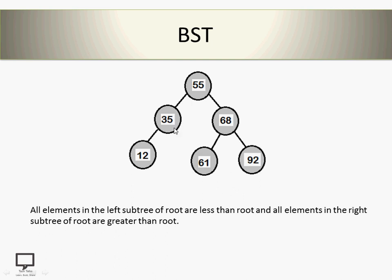Let's consider 35 as a root node. For 35, only a left subtree is present with value 12, which is less than 35, and no right subtree is present. Now let's consider 68 as a root node — 61 is less than 68 and 92 is greater than 68. So every node in this binary tree follows the property, and that's why this tree is called a binary search tree.